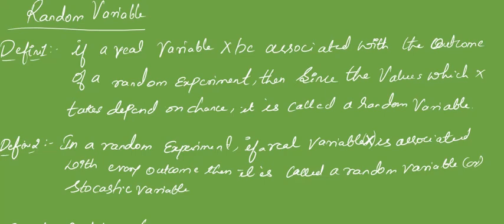The next topic is random variable — it is a simple topic. Random variables deal with random experiments where a real variable X is used. Usually all random variables are denoted by capital letters. If a real variable X is associated with every outcome of our experiment, then that variable is called a random variable, also called a stochastic variable.